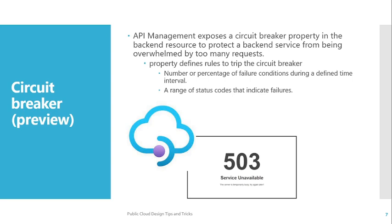Now, the Circuit Breaker, which is currently in preview by Microsoft. Circuit Breaker is about controlling the overload coming towards your APIs. It uses the architectural circuit breaker pattern. API Management exposes a circuit breaker property in the backend resources, which you can configure to protect the backend service from being overwhelmed by too many requests. When a lot of requests are coming in and your backend is overloaded, you can enable the circuit breaker pattern based on certain conditions — such as the number or percentage of failures, or a range of status codes that indicate a failure. In that case, API Management will stop receiving requests from your consumers and return a 503 Service Unavailable, protecting your backend.